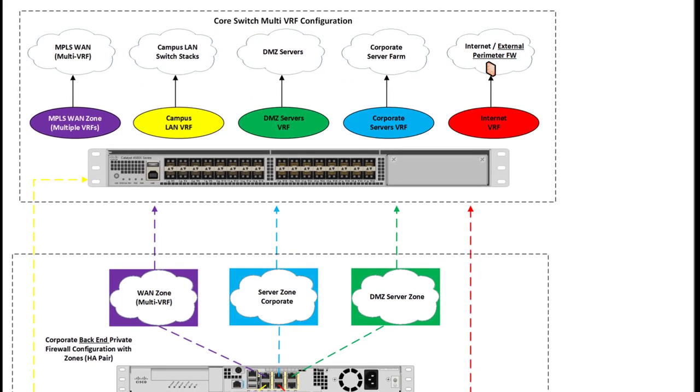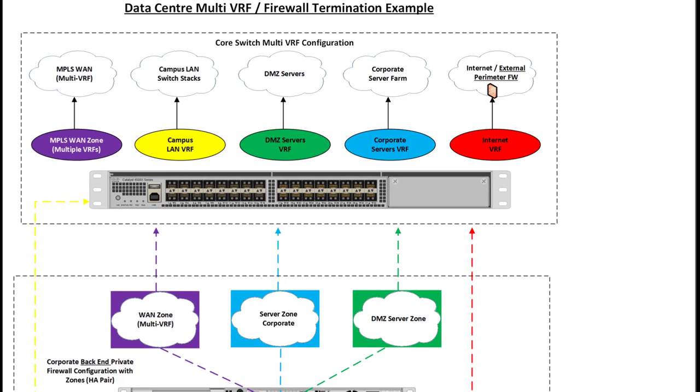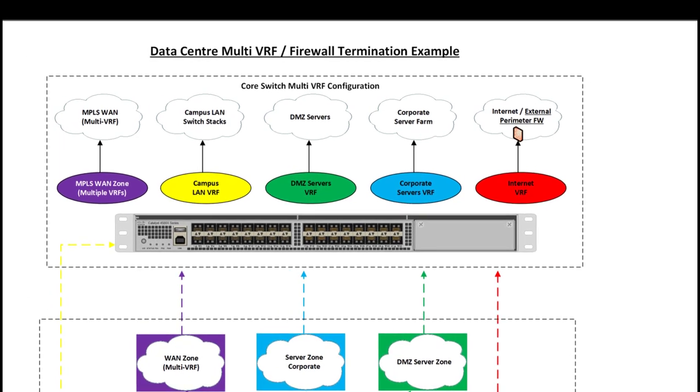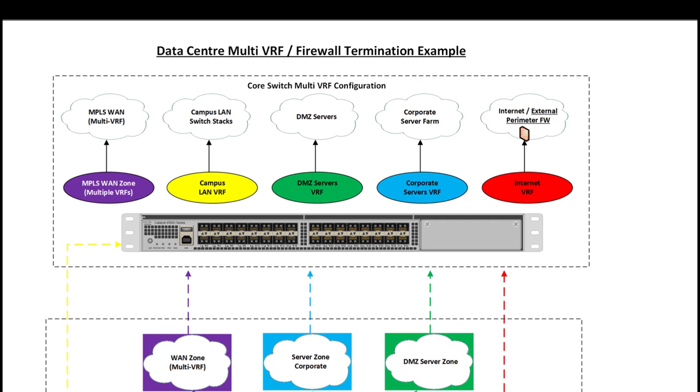How those zones align into the local area network, you see we have different VRFs at the top for purple, yellow, green, blue, and red, where we have potentially another perimeter firewall upstream connected to the core switch.